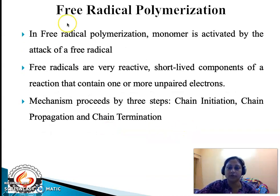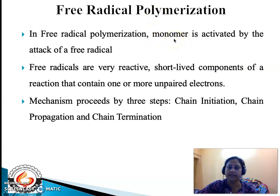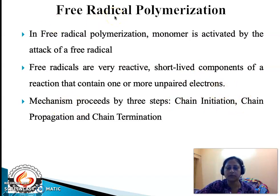Now let us come to the main topic of this lecture — free radical polymerization. When addition polymerization proceeds by the attack of a free radical, we call it free radical polymerization. The monomer being attacked must have a double or a triple bond. Free radicals are highly reactive and can contain one or more unpaired electrons. Irrespective of the reactive intermediate involved, the mechanism of addition polymerization proceeds by three steps: chain initiation, chain propagation, and chain termination.